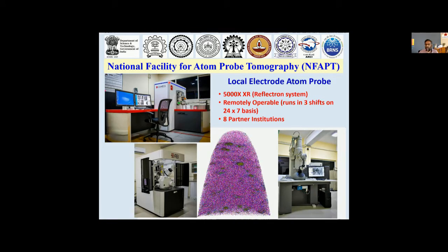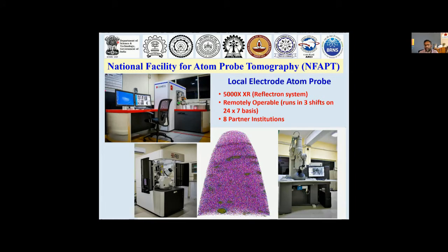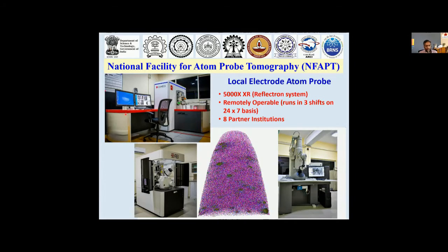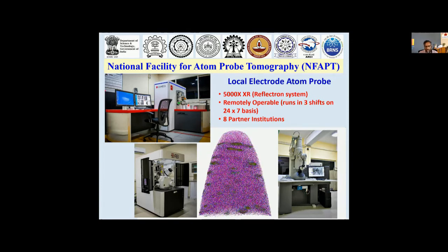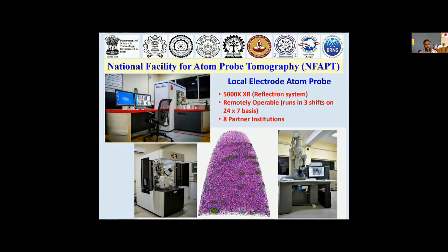We can actually see every atom as a dot and see where which atom is sitting in a material in three dimensions — like a CT scan but at the atomic level. This is the first of its kind which has come to this country. We have eight institutions which came forward — five or six IITs, ARCI, and Bhabha Atomic Research Center — each giving around two crores each, getting about 16 crores. We went to DST and I said I have already got about 16 crores, can you give me 20 crores more? That is how I got about 25 crores total. This is the first national facility of this kind. What is also beautiful is this machine can be operated from anywhere in the world — it is the first atom probe in the whole world which can be remotely operated. It runs 24 by 7 with three operators in three shifts.